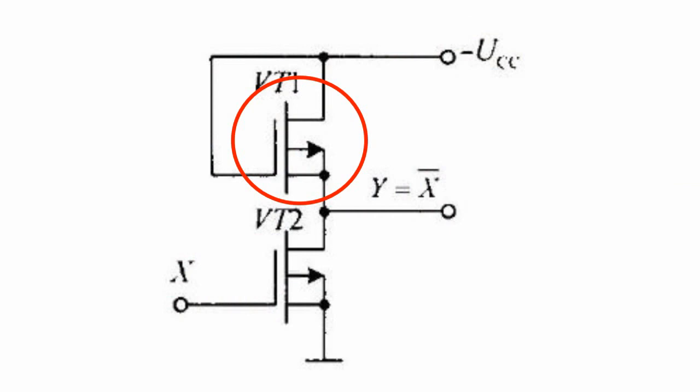load transistor FVT1 is used. Its strain is connected to the negative power supply. The negative polarity voltage of the input variable is applied to the gate of input transistor VT2.